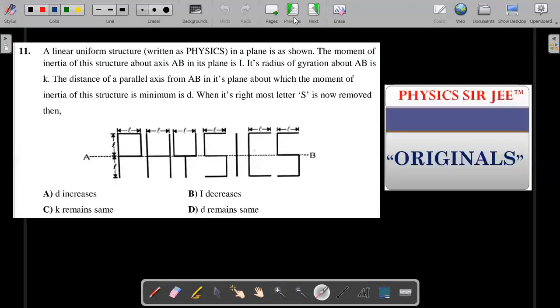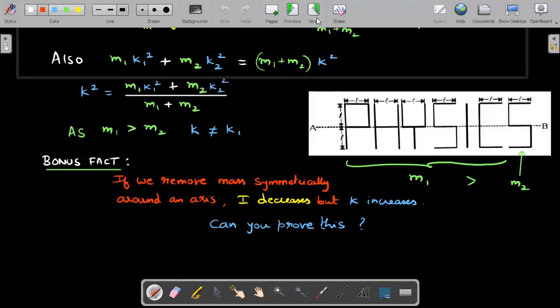I think D increased and I decreased. K actually didn't remain same. It changes as I could prove and therefore this is also a wrong answer. So this is the correct solution for it.